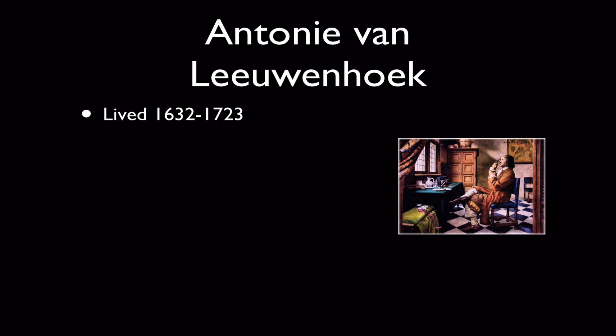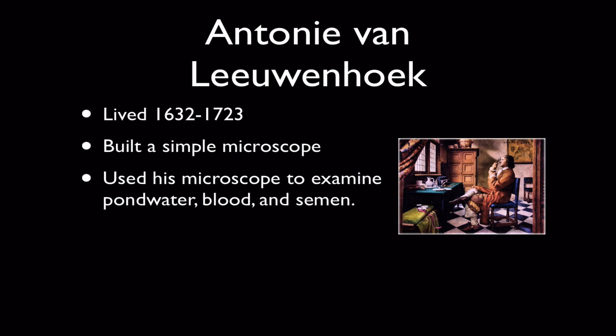One of the scientists you need to know for this part of the cell theory is a Dutchman named Antoni van Leeuwenhoek. He lived from 1632 to 1723, so in the middle of the 17th century into the early 18th century, and he built a very simple microscope.